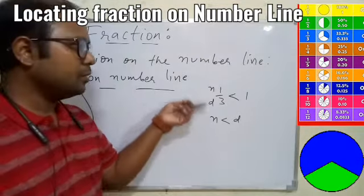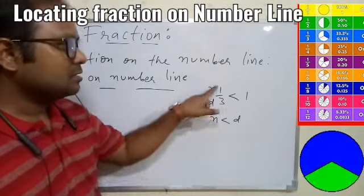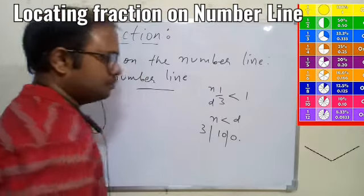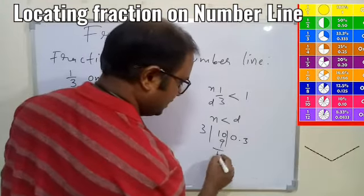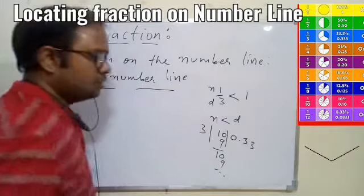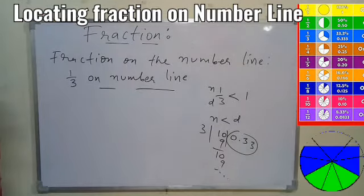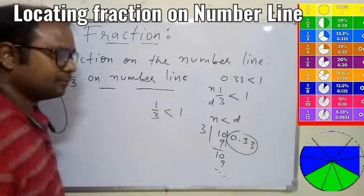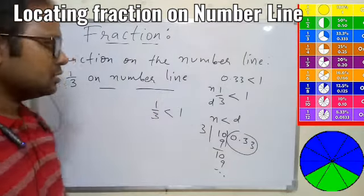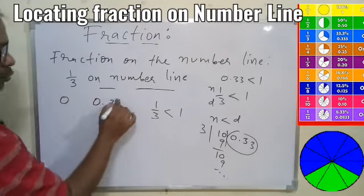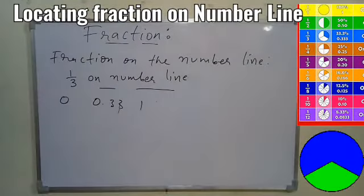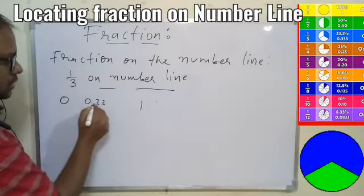Just remember: if your numerator is less than the denominator, the fraction will be less than 1. You can verify: if we divide 1 by 3, the decimal will be 0.33, and 0.33 is less than 1. So 1/3 is less than 1, but it is greater than 0. So 0.33 is somewhere between 0 and 1.